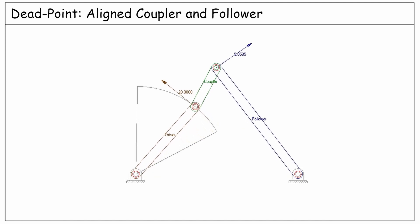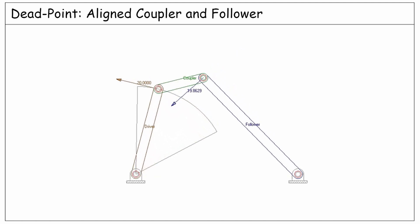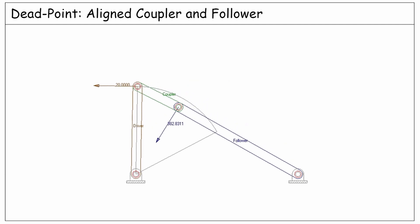Now let's see this in a working mechanism. In this example, there is one dead point here when the coupler and the follower are aligned.